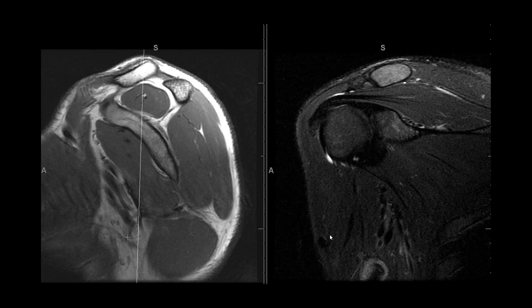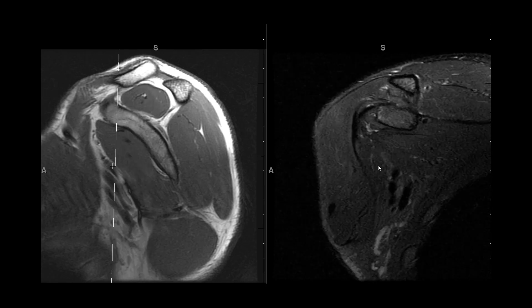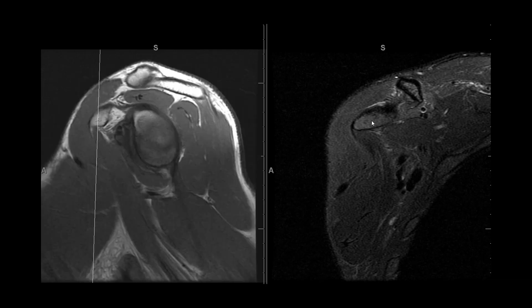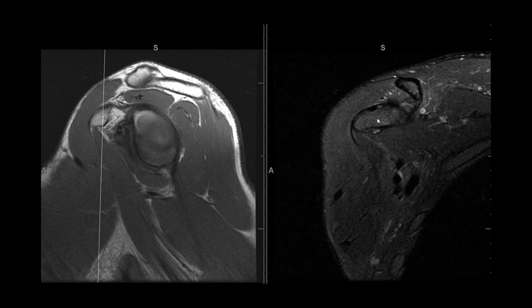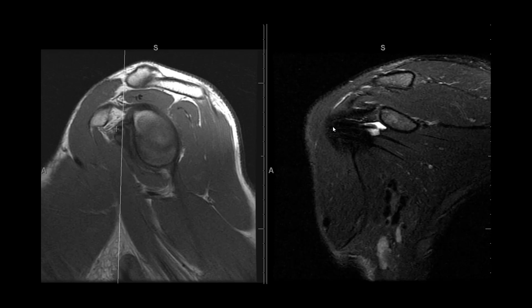The coronal MRI can be difficult, especially in determining whether you're seeing the subscapularis versus the infraspinatus or teres minor. One helpful tip is to identify the osseous structures — if you have a bony projection like this, it would be the coracoid process, meaning you're located far anteriorly in the shoulder, as confirmed by cross-referencing the sagittal. Anything close to the coracoid process is anterior and would be the subscapularis, with the tendon inserting on the lesser tuberosity.